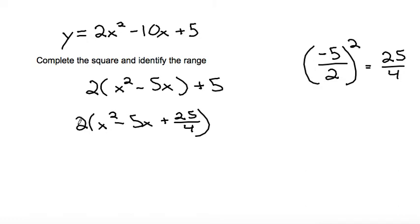But also, since we have this coefficient of 2, we're not just adding a 25 over 4, we're adding 25 over 4 times 2. So what we're actually adding is 25 over 2, so we need to subtract out a 25 over 2 to keep things balanced. We'll bring down the plus 5.